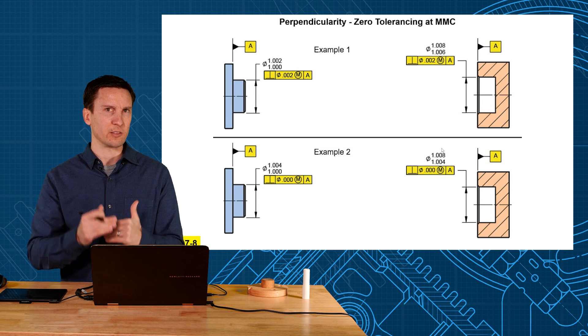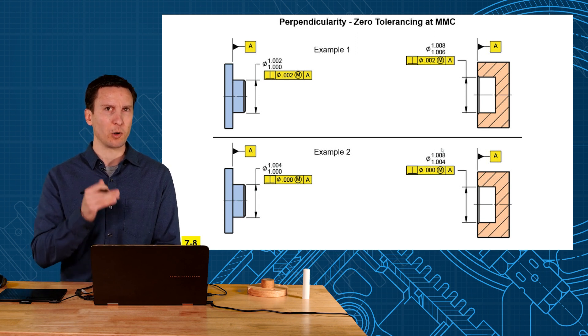So if both of them would work in the assembly, which one should be put on the drawing? Which one gives more manufacturing tolerance?